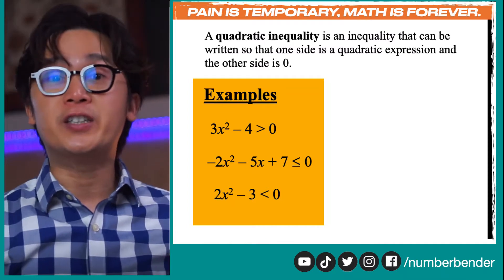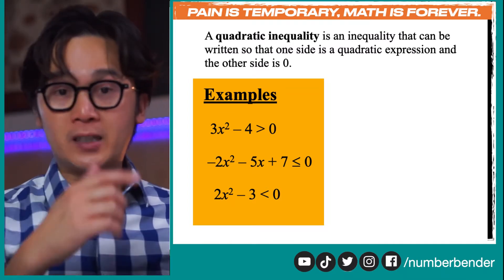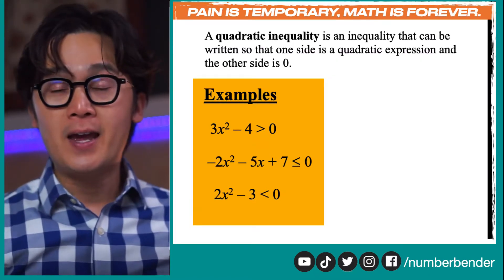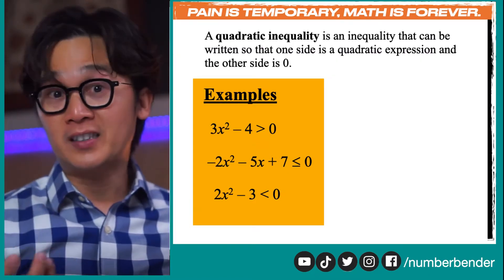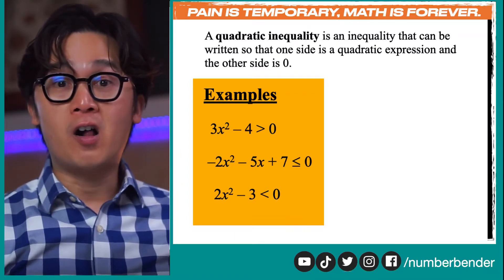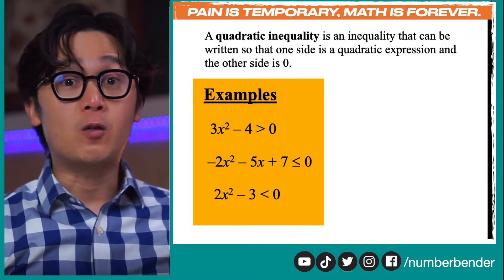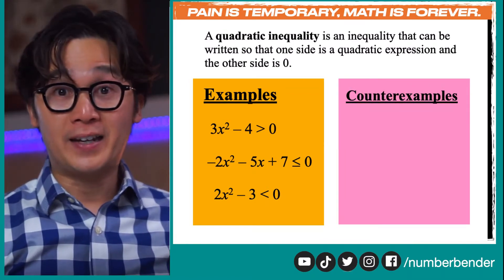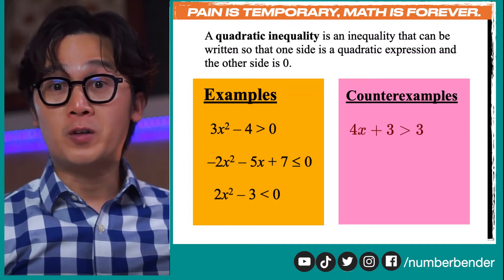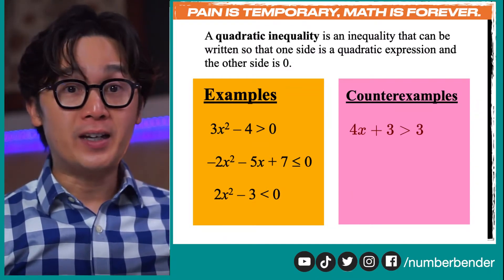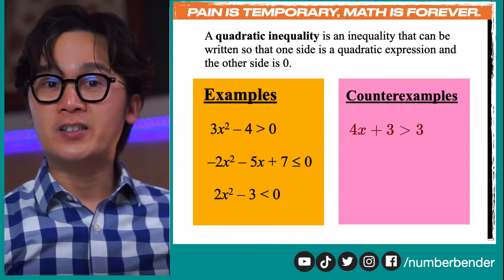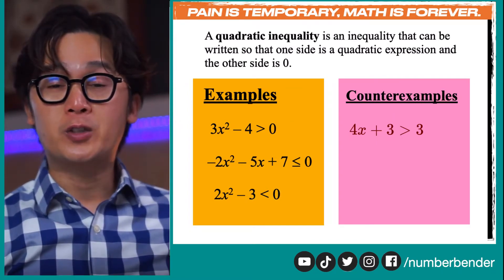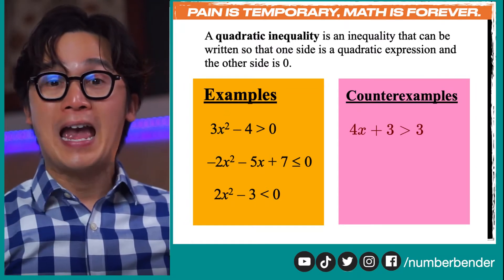All of these are quadratic inequalities because their highest exponent is 2 and we're not seeing an equal sign. That's why they're called inequalities. Now, some counterexamples: 4x plus 3 greater than 3 is not quadratic — even though it is an inequality, it's a linear inequality.